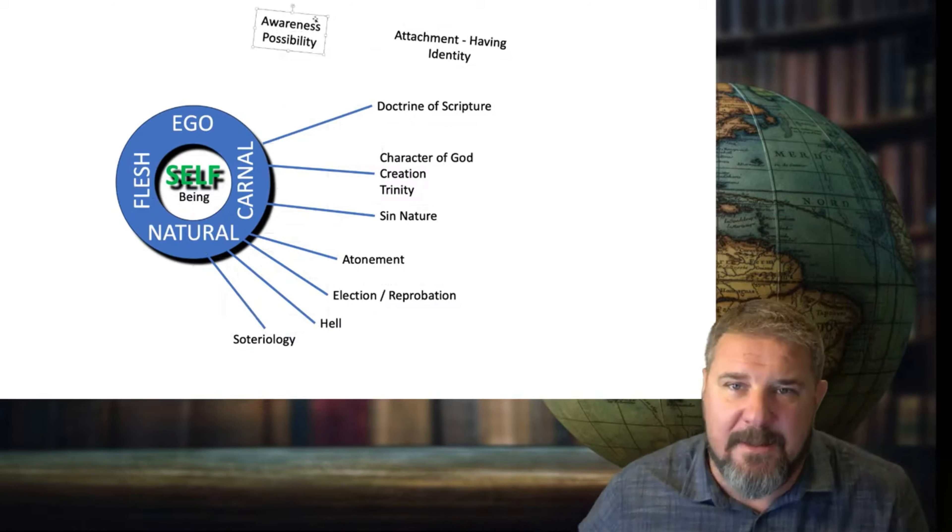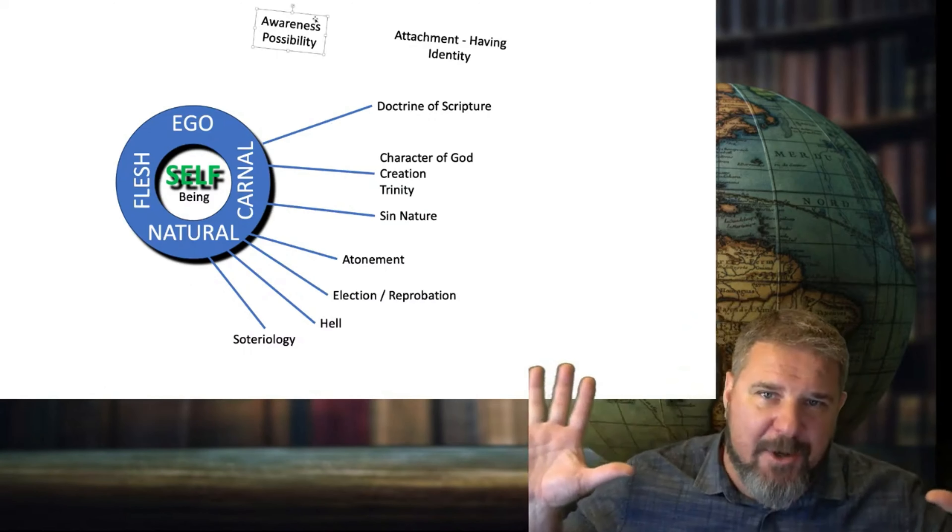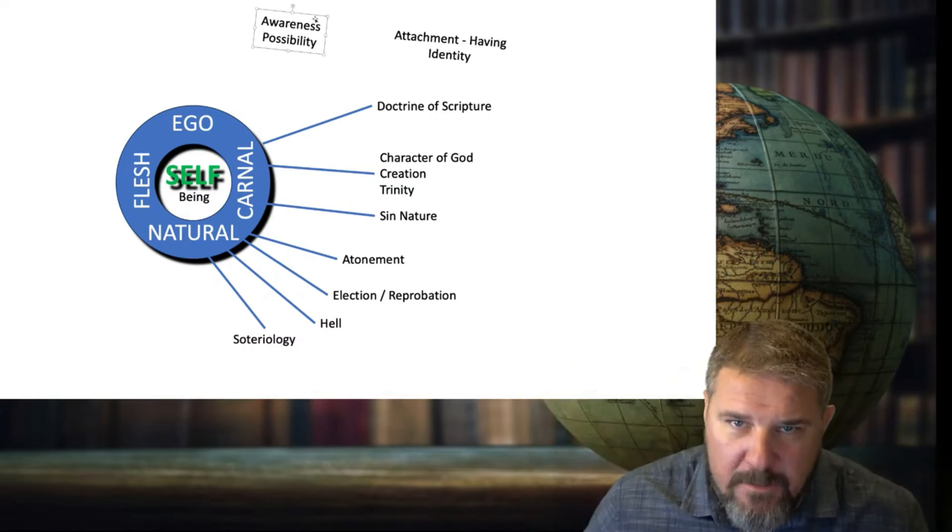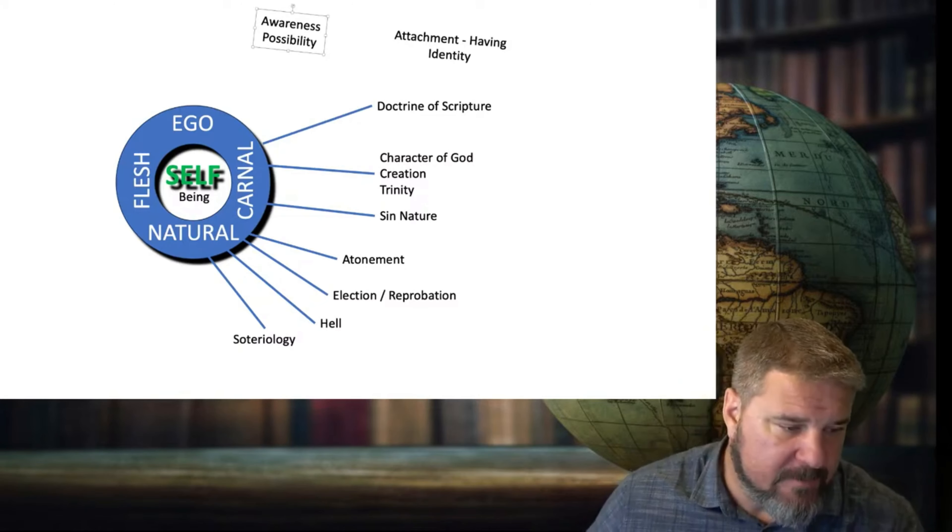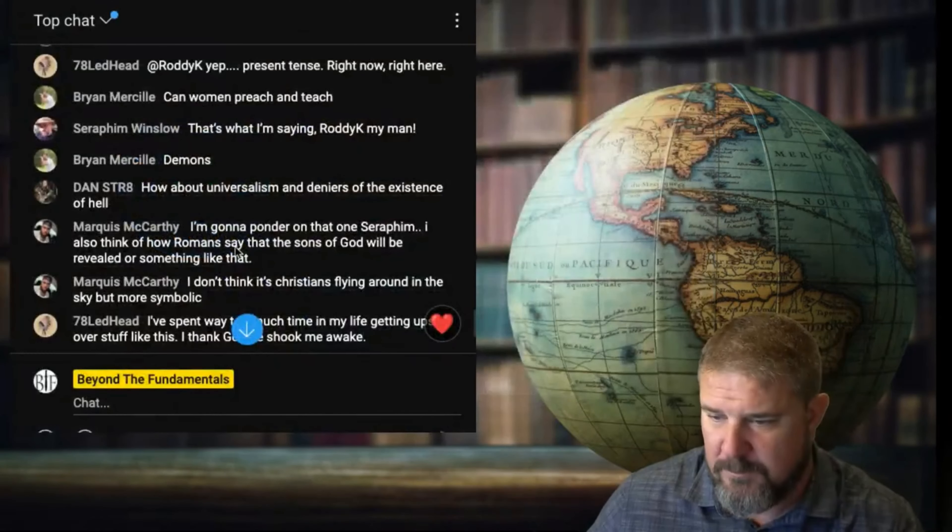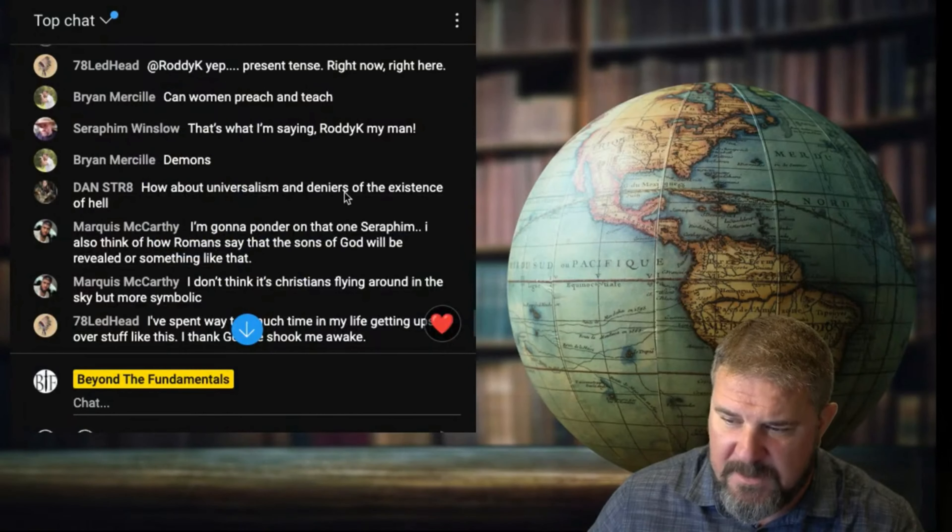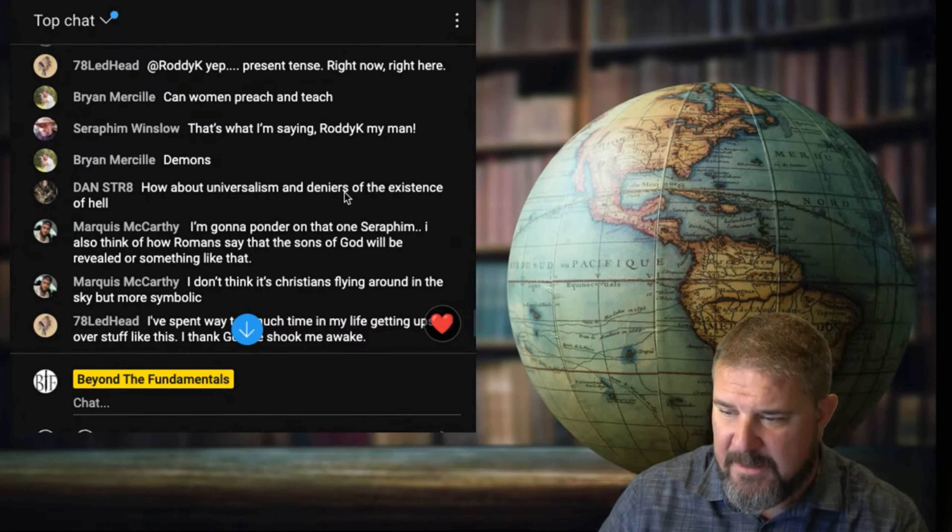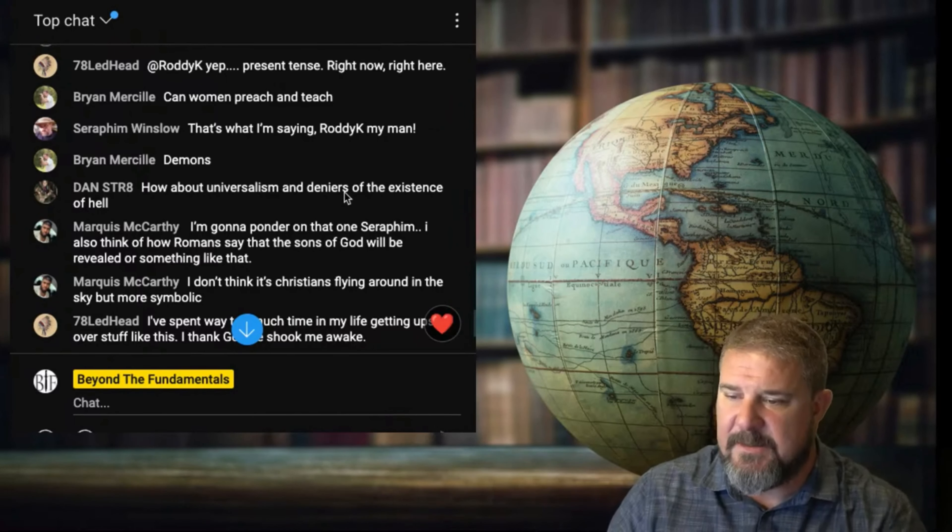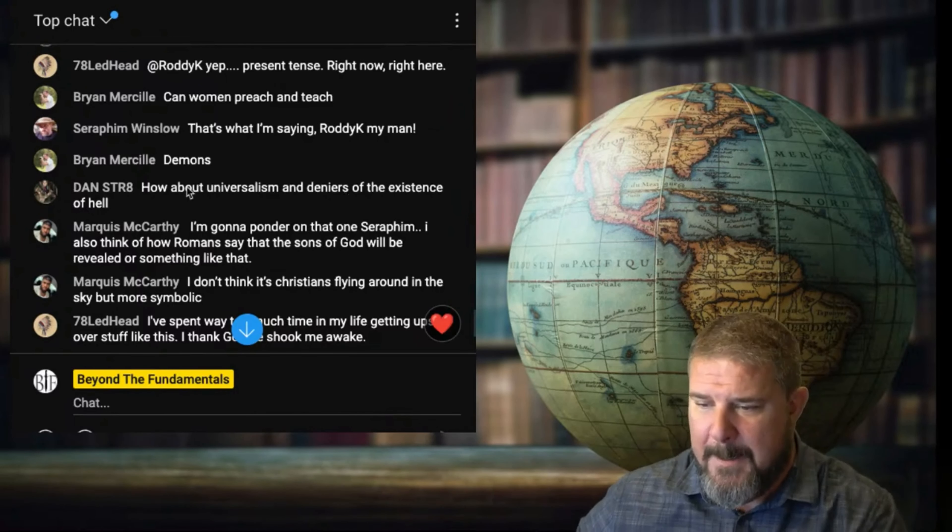See, the thing isn't the truth of the matter of these things. That's not the issue. People need to know, like this guy in the comments section. It looks like his name is Dan Straight. How about universalism and deniers of the existence of hell? When you refer to somebody as deniers, it sounds like you're using that as a slur or an epithet as if you're presuming there is the existence of hell and these guys should be treated as second-class citizens.